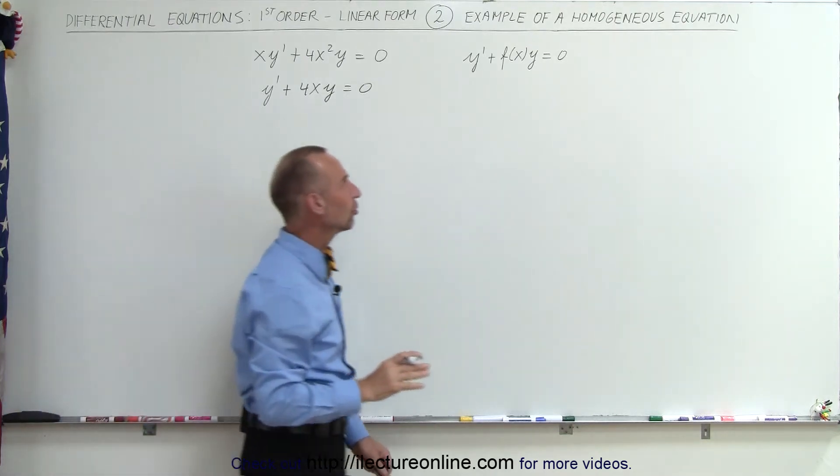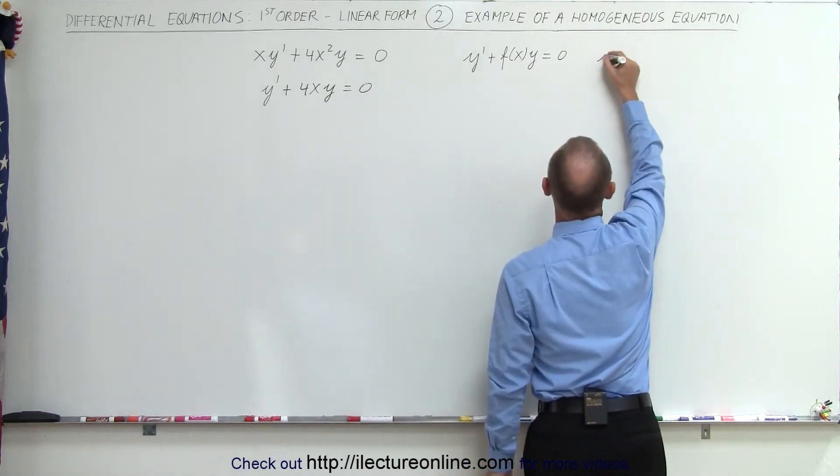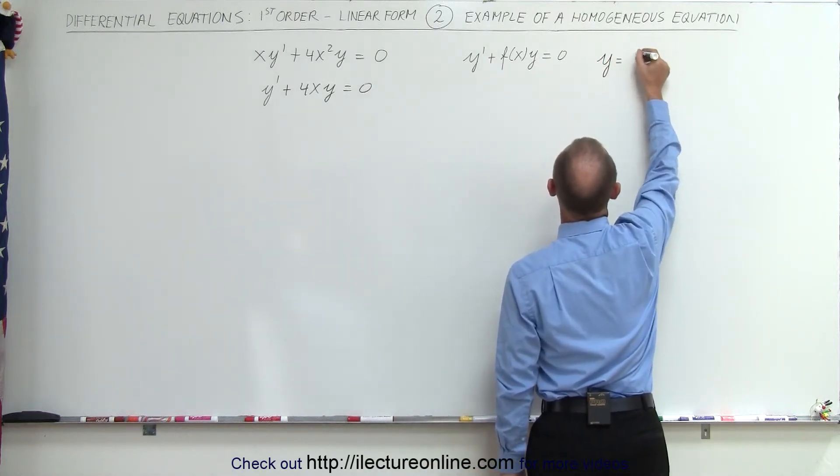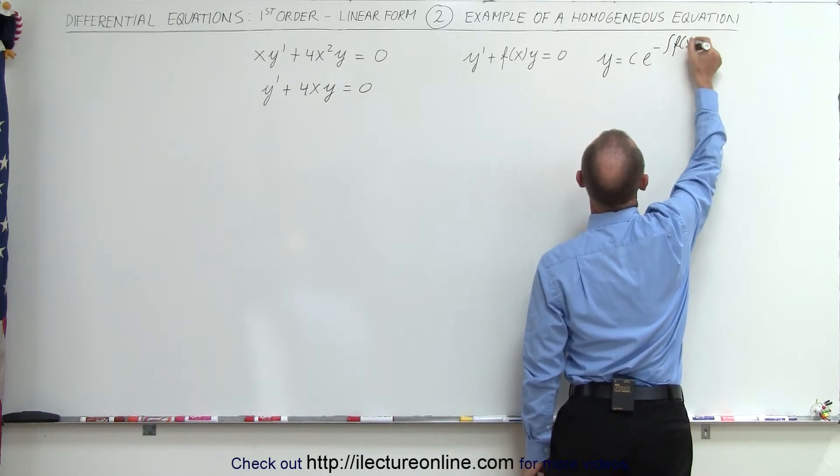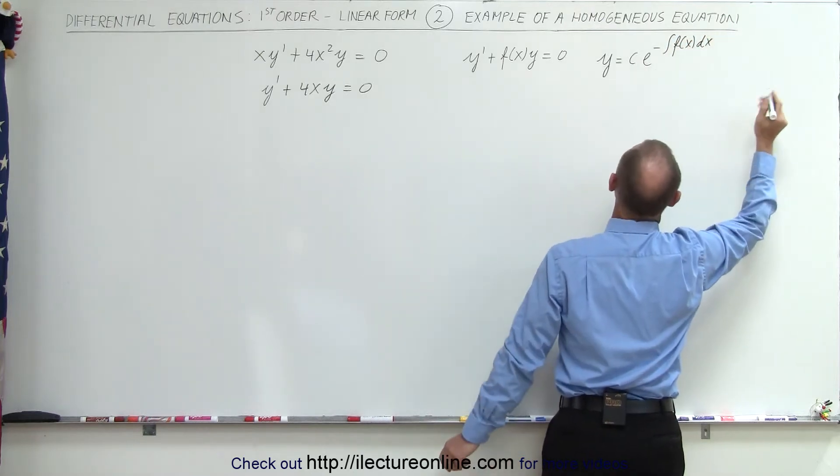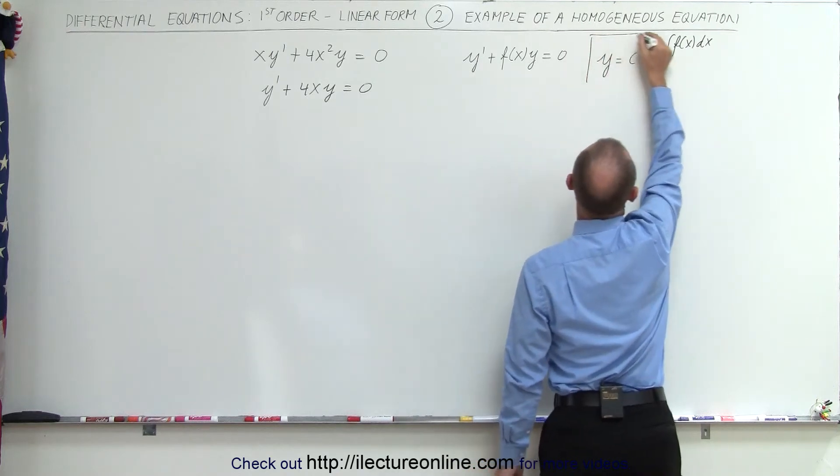Now we know that the general solution of this equation is y equals some constant times e to the minus integral of the function of x dx. That would be the form of the solution.